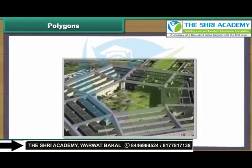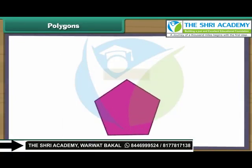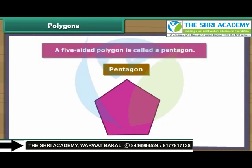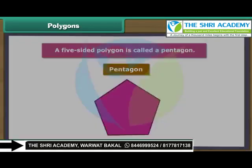Look at this image of the US Army Headquarters. It is known as the Pentagon as it has five sides. A five-sided polygon is called a pentagon.